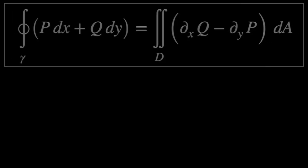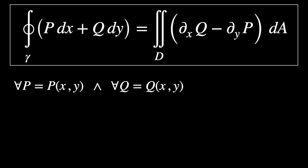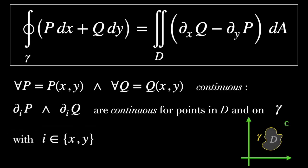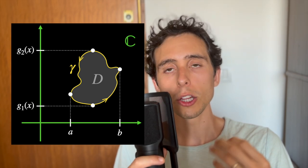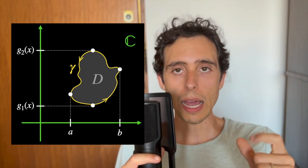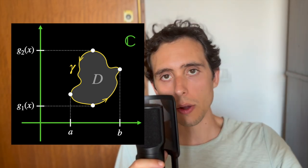Now that we established all these conditions, let's see the equation we want to prove — that's Green's theorem. This is true for any functions P and Q depending on x and y that are continuous, such that their partial derivatives with respect to x and y are continuous for points inside the region D and on the curve gamma. Consider the x component of points on gamma ranging from A to B, and the y component ranging from G1 of x to G2 of x, where G1 and G2 are the lower and upper boundary functions of the closure of D respectively. By the closure of D I mean the region D together with its boundary — points on gamma.